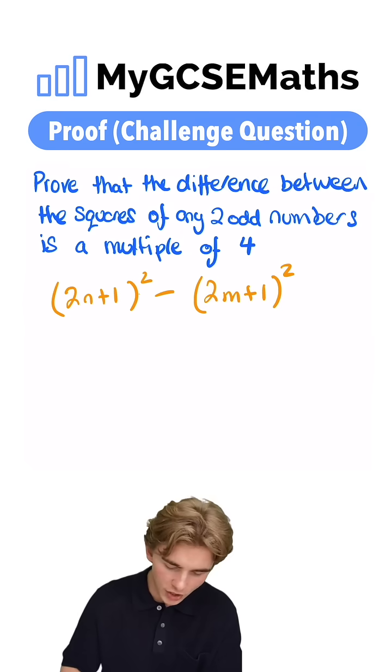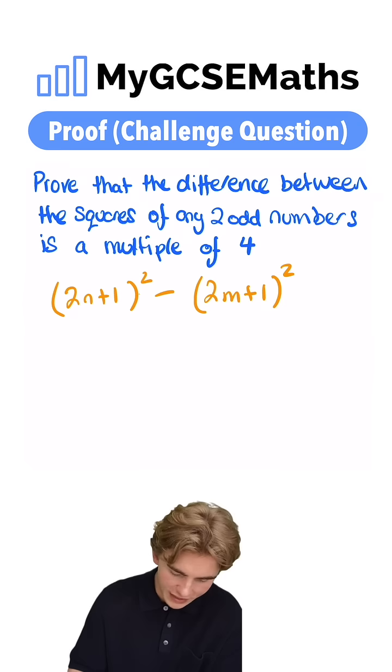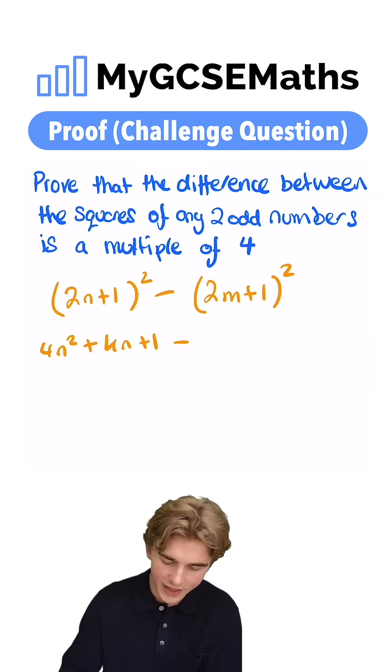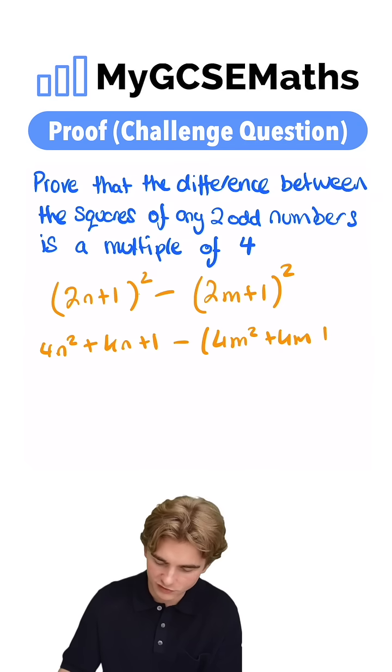We could write these out as double brackets, and when we expanded them, we would get 4n squared plus 4n plus 1. And we're going to be taking away 4m squared plus 4m plus 1.